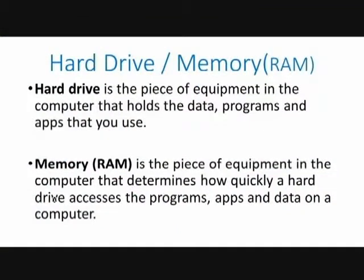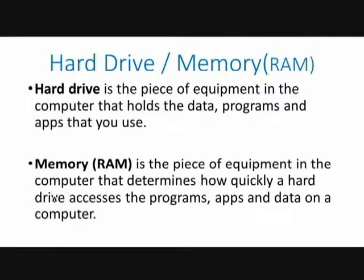Then we have hard drive. A lot of people confuse hard drive and memory to be the same thing, because when people say, oh, my computer doesn't have enough memory anymore, what they're actually saying is my computer doesn't have enough hard drive space. Your hard drive is where the information is stored. Your memory is how fast your computer accesses that information. Your hard drive is where your data is stored — that's the size that matters most when it comes to putting things on your computer. Then memory is how fast your computer can find things.